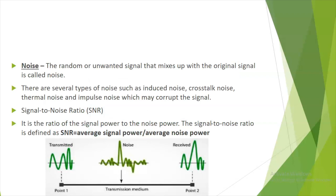Third, noise is an unwanted or random signal that mixes with the original signal. There are several types of noise: induced noise, cross-talk, thermal noise, and impulse noise, which may corrupt signals. The signal-to-noise ratio (SNR) is the ratio of average signal power to average noise power.